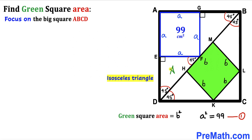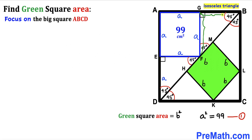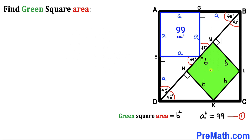Triangle DEF is isosceles since both base angles are 45°. Therefore, if side EF is lowercase a, then side DE is also lowercase a. Similarly, in triangle FGB, we have a 90° angle and a 45° angle, making the third angle 45° as well. So triangle FGB is also isosceles, meaning side GB equals lowercase a.